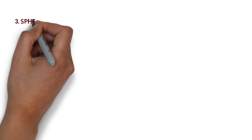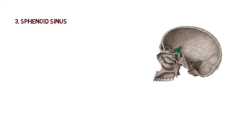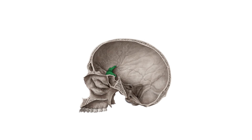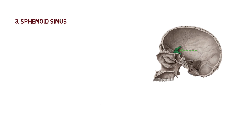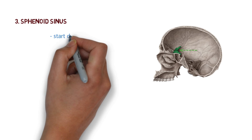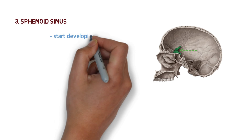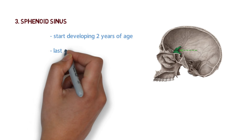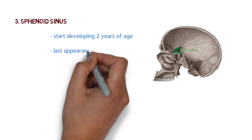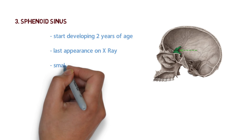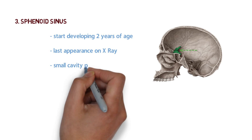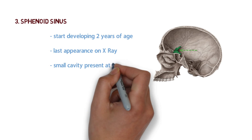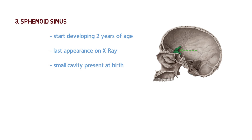The third sinus is the sphenoid sinus, present in the sphenoid bone. The sphenoid sinus occupies the body of the sphenoid bone. It starts developing after two years of age and is the last to appear on X-ray compared to the other paranasal sinuses. At the time of birth, there may be a small cavity present for the sphenoid sinus.